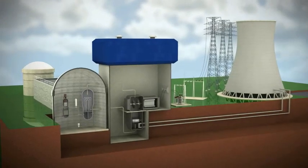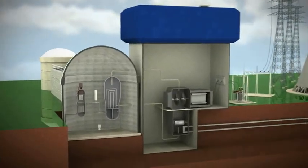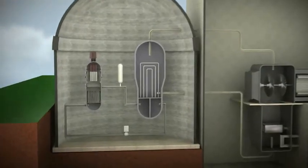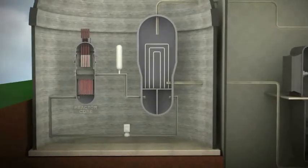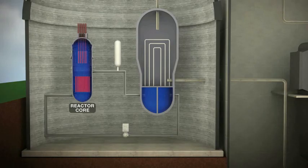The process of creating electricity using nuclear power begins with the splitting of uranium atoms in the reactor. This process, called fission, produces heat.